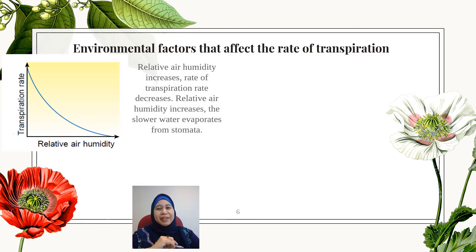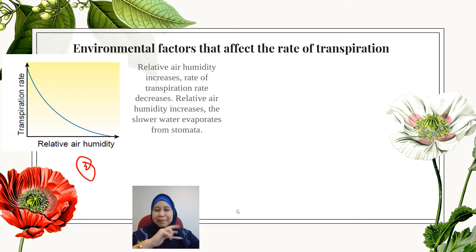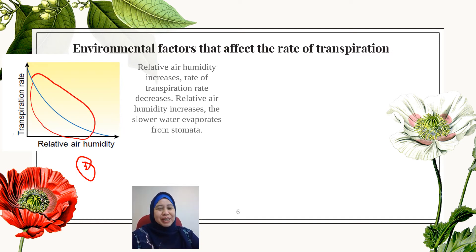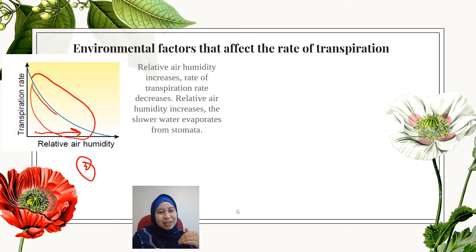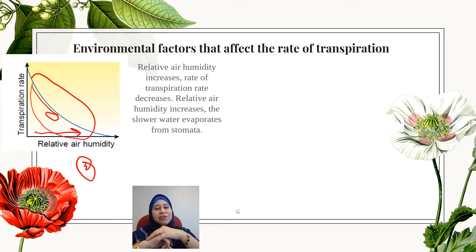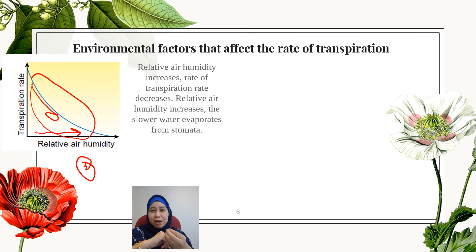The next environmental factor is relative air humidity, factor number three. From the graph, we can see that when relative air humidity increases, the transpiration rate actually decreases — the graph goes down. This is because when relative air humidity increases in the atmosphere, the evaporation of water from the stomata becomes slower, meaning the transpiration rate decreases.